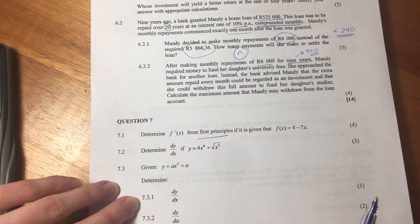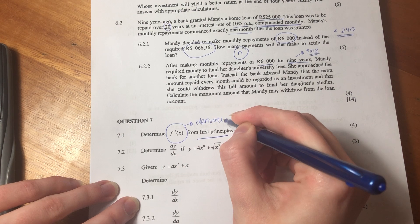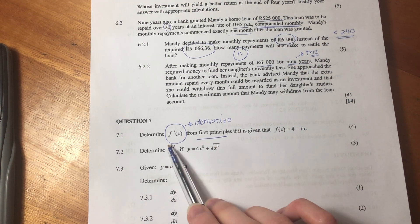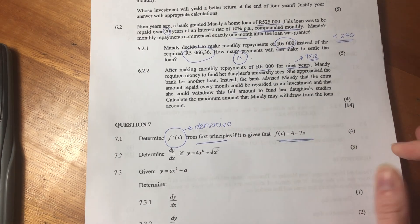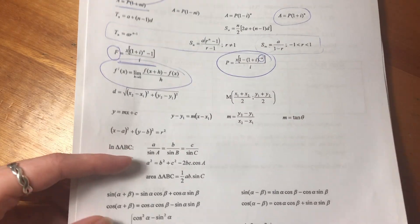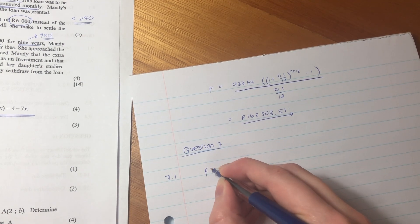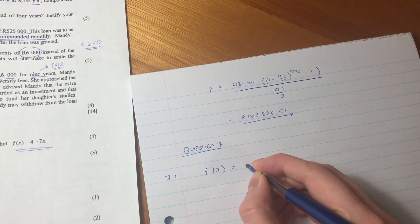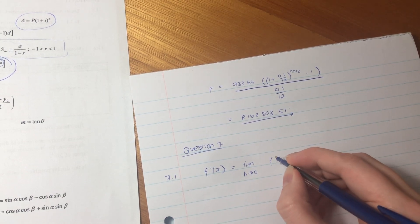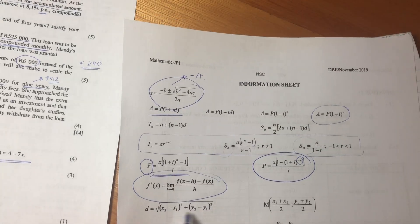Let's just jump into the first question. Typical question, they will always ask you a question about first principles. So they're saying determine the derivative from first principles if it is given that f of x equals this. When you see first principles, you must jump into your head, go to your formula sheet, and you see here there's our first principles formula. So we're just going to write that down.